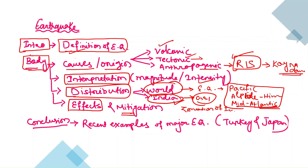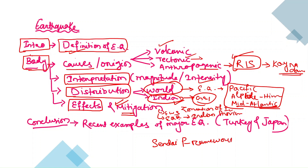One more important thing: effects were asked in PYQs, so you should also predict that mitigation can be asked. If effects of earthquake are asked, measures to reduce those effects can also be asked — you have to predict future question trends. So add mitigation in your notes: earthquake-resistant structures, Indian provisions, and the Sendai Framework for disaster resilience, which also incorporates earthquake-resistant infrastructure. This makes your notes holistic and relevant for any angle the question may come from.